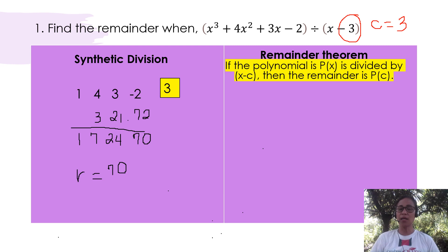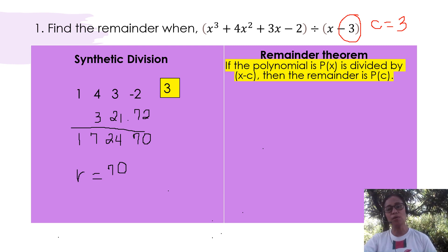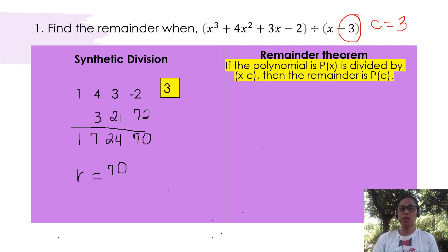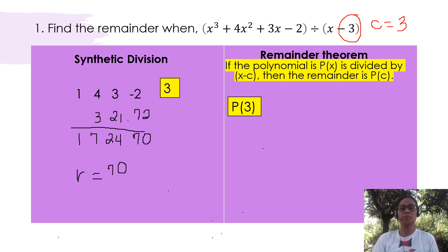Now let's apply the remainder theorem, which states that if the polynomial P of x is divided by its divisor x minus c, then the remainder is obtained simply by solving P of c. Since the value of c is 3, it only means that we are going to solve for P of 3. P of 3 means all the x variables in our dividend have to be substituted with 3.